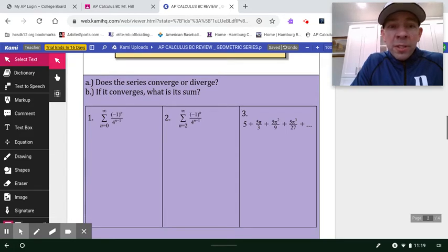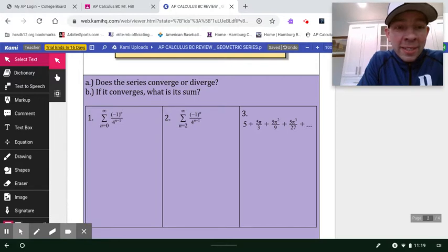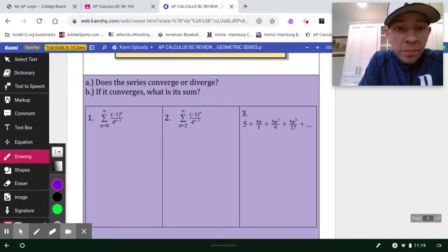As we go through these three, we want to first make a determination, does it converge or not? And then if it does, to what? How am I going to recognize when I look at number one, how am I going to recognize this as a geometric? I like to reorganize it and get it in what we like to call general form, a times r to the n.